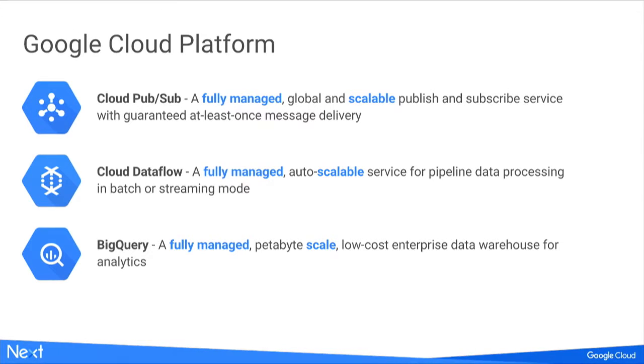They are all fully managed and scalable, but they do different things. Cloud PubSub is our global publish-and-subscribe service — it guarantees at-least-once delivery. Cloud Dataflow is our fully managed data processing service that lets you run programs in batch or streaming mode. It comes with a very powerful programming model — the result of years of focusing on developer experience at Google. BigQuery is our fully managed, petabyte-scale, low-cost data warehouse for analytics, and it's a favorite for data analysts.